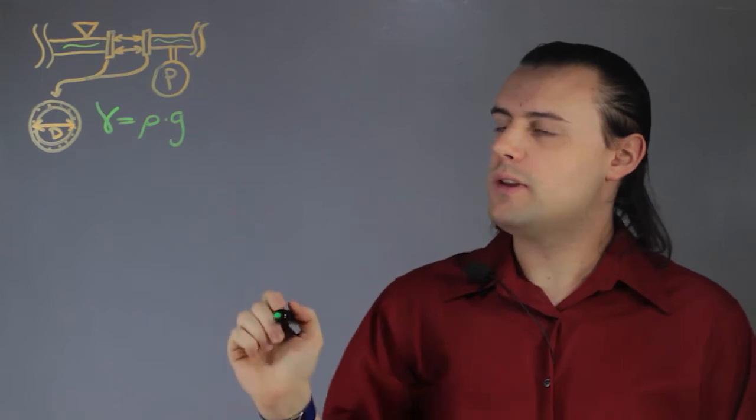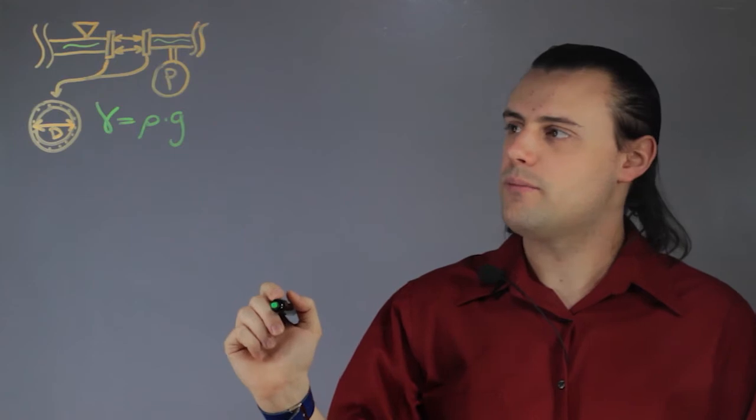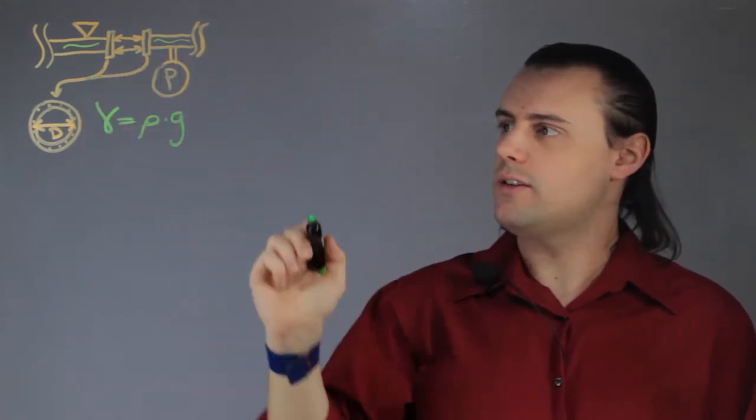Where rho is the density of the liquid and G is the gravitational acceleration. So if we consider a liquid being water inside of here,